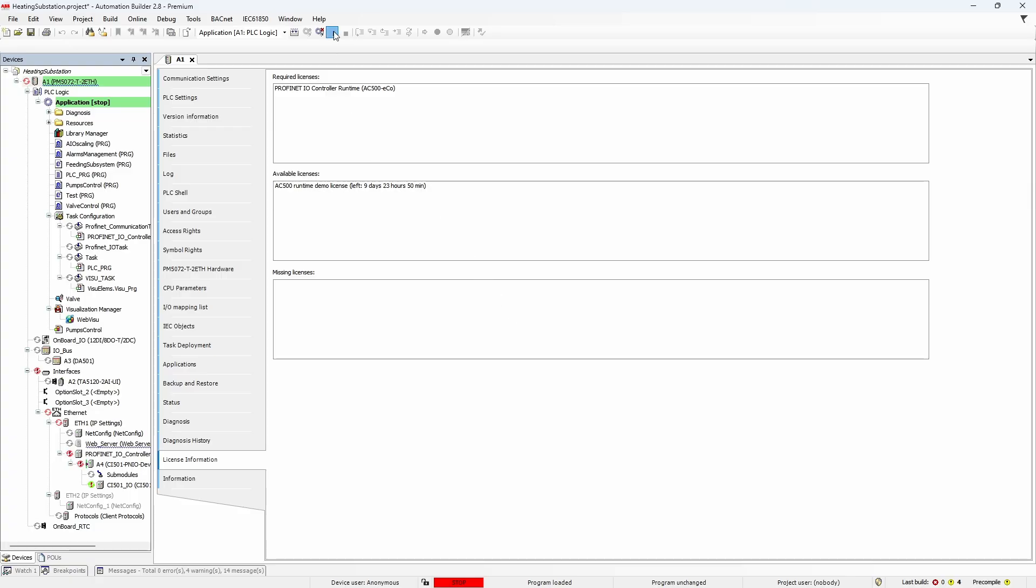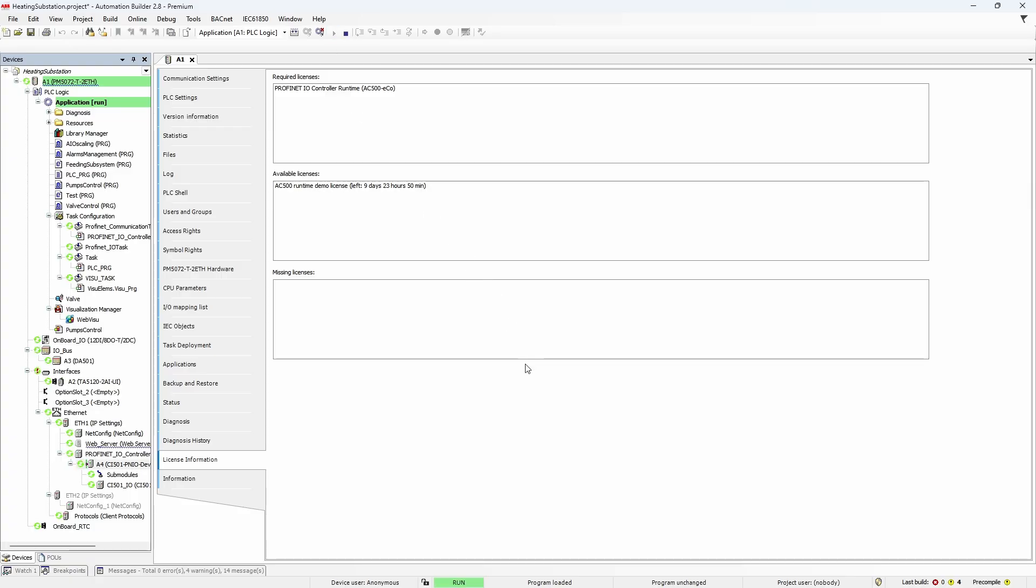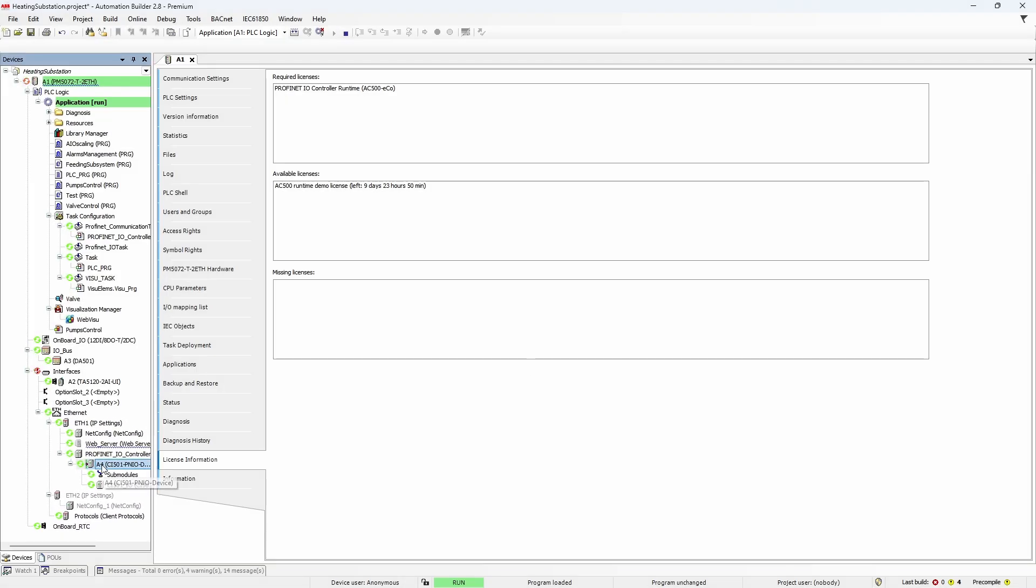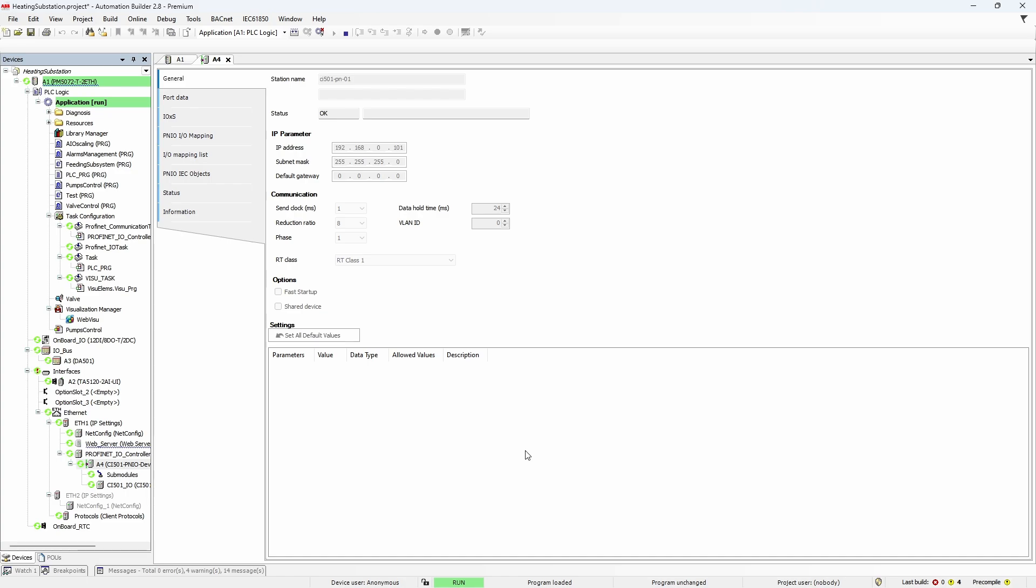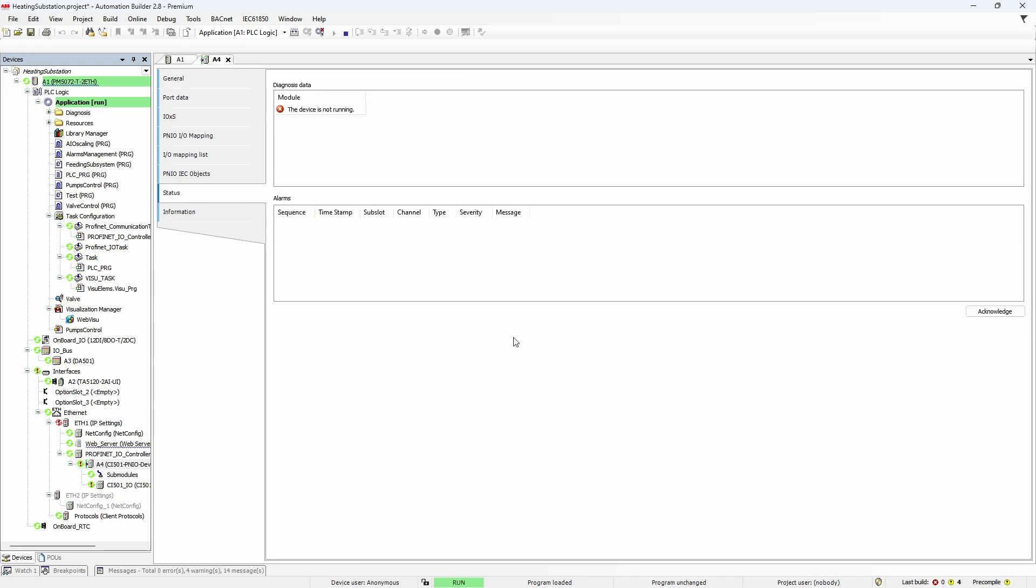The controller should establish communication to the device. And as a result, CI501 station in the project tree turns green. Status string should also say OK. What if we disconnect the cable from the I/O station? Status message will indicate that the controller cannot find a device with such a name. On the status tab, there will be the device is not running message. And CI501 element in the project tree will be highlighted with exclamation mark.